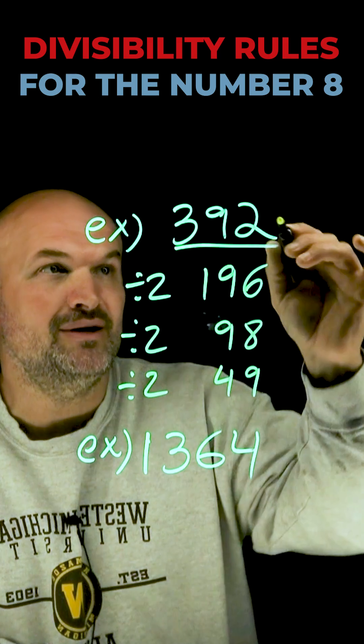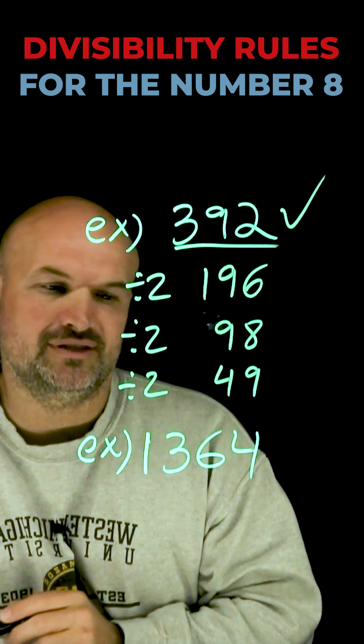So, therefore, the number 392 is indeed divisible by 8. Now, let's go and take a look at the last one.